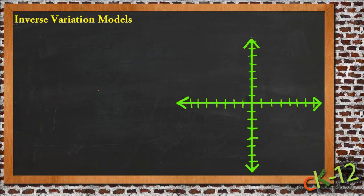Inverse variation models are the opposite of that. With an inverse variation, when one value increases, the other decreases.